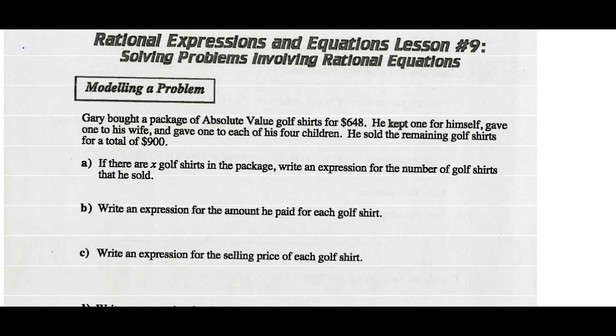Gary bought a package of absolute value golf shirts for $648. He kept one for himself, gave one to his wife, and gave one to each of his four children. He sold the remaining golf shirts for a total of $900. If there are X golf shirts in the package, write an expression for the number of golf shirts that he sold.